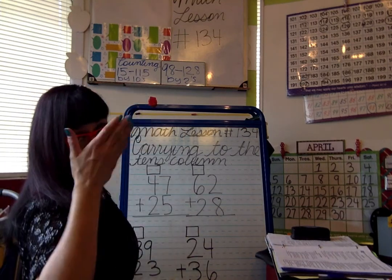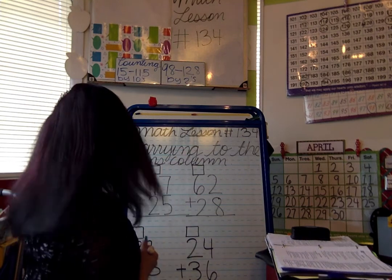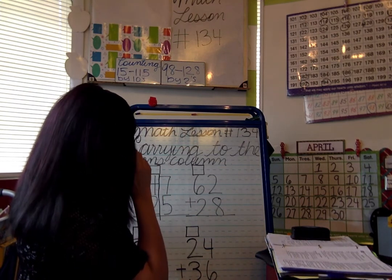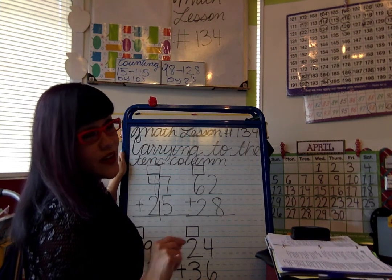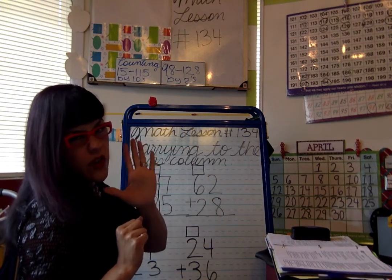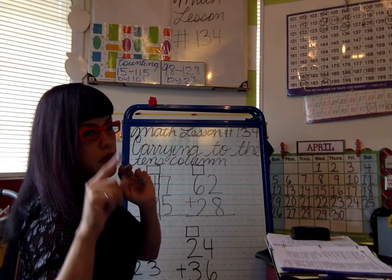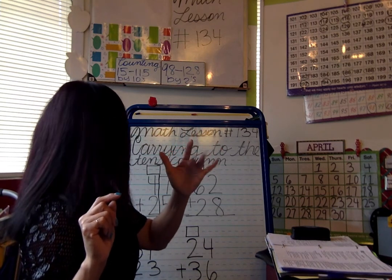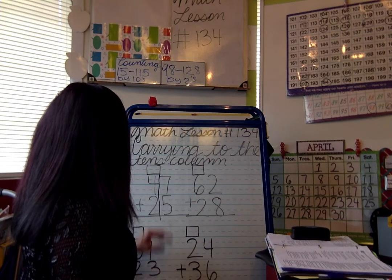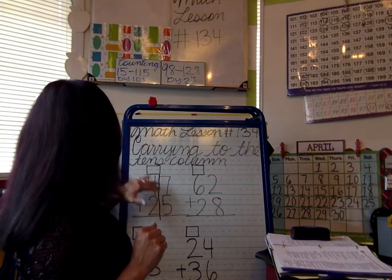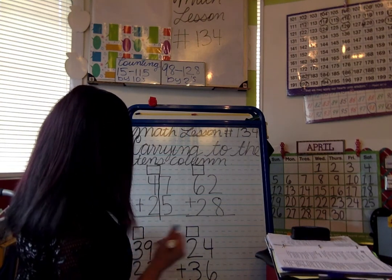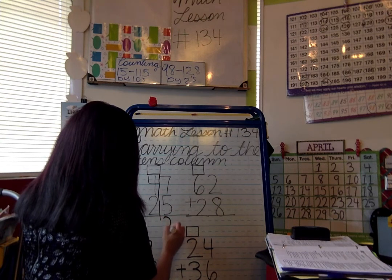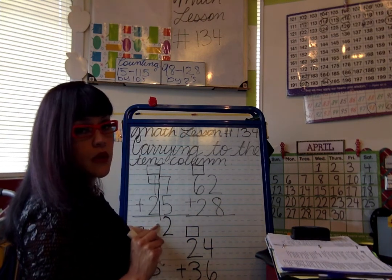The first thing we do is make our split down the center so we can focus on the right side, which is the ones place. What is seven plus five? Keep seven in your head and add five — seven, eight, nine, ten, eleven, twelve. So twelve: seven plus five is twelve. Now write your number two only in the ones place.